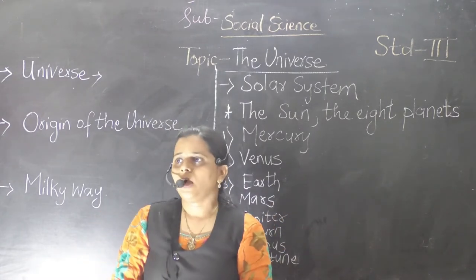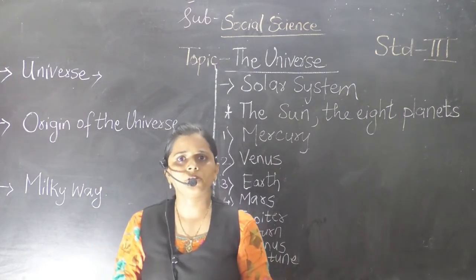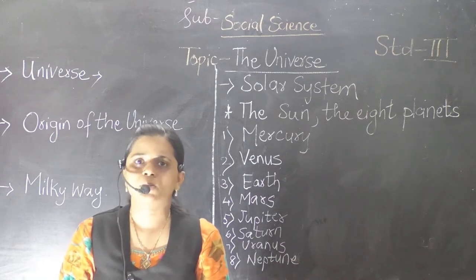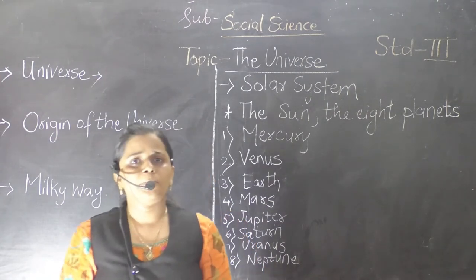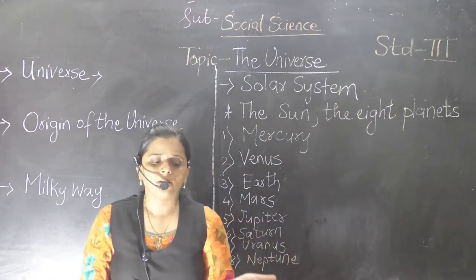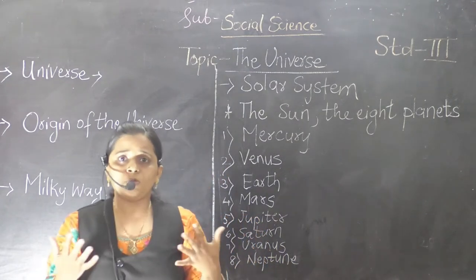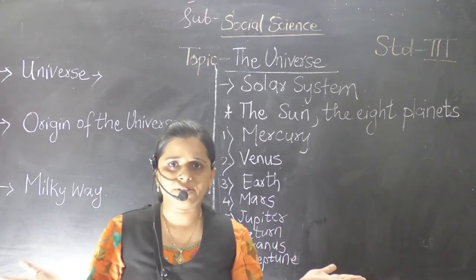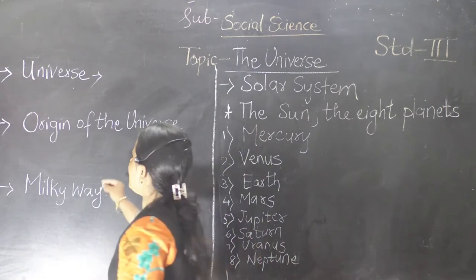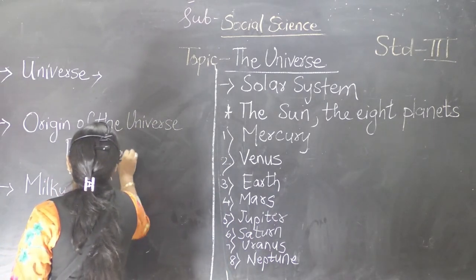After that we will see the origin of the universe — how the universe was created. Scientists believed that billions of years ago there was a huge explosion, a huge fireball was created. That theory is known as the Big Bang Theory.